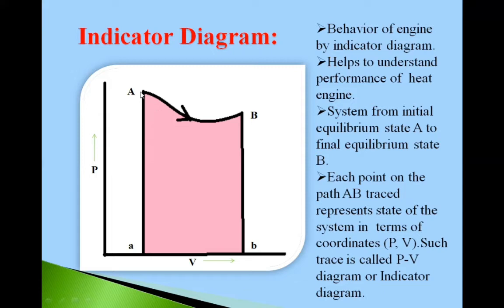Means system undergoes change from A to B along this path AB. And every point on this trace indicates state of the system in terms of coordinates PV. This is also called indicator diagram. We can also call it as PV diagram.